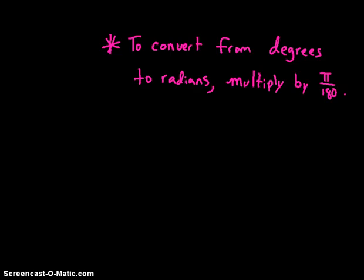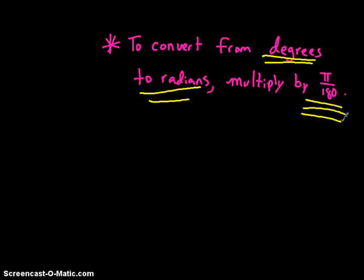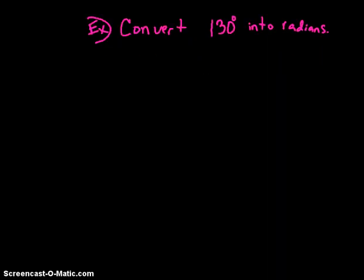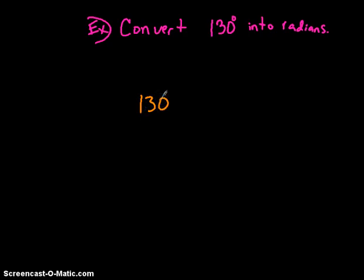If you want to go backwards and convert degrees back into radians, you multiply by pi divided by 180. It's basically going to flip the last fraction. So if the direction is to convert 130 degrees into radians, you take 130 degrees and multiply by pi over 180.